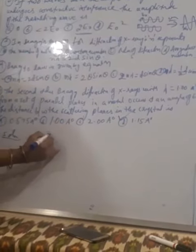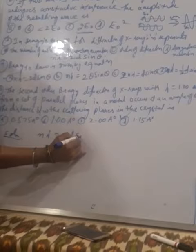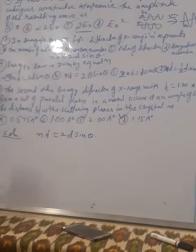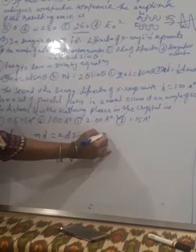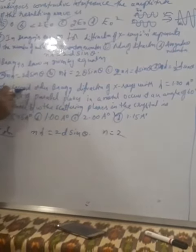Formula: N lambda is equal to 2D sin theta. So here given data is N is equal to 2, second order.